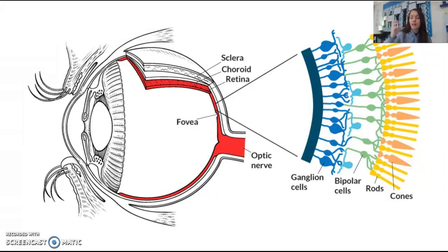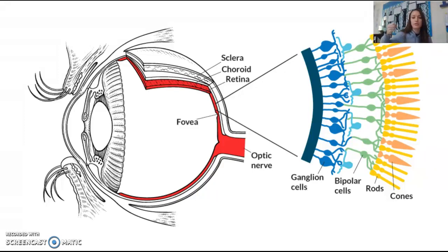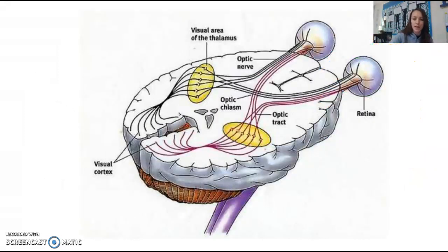Rods and cones take in light and help you interpret it through a process called transduction — they change light waves into a brain message, and then send it through the optic nerve to the brain.